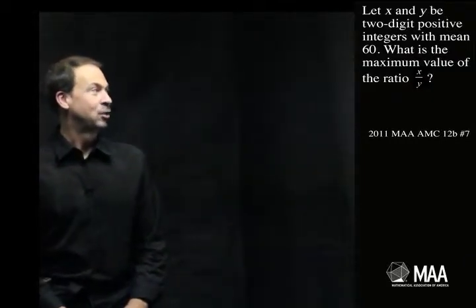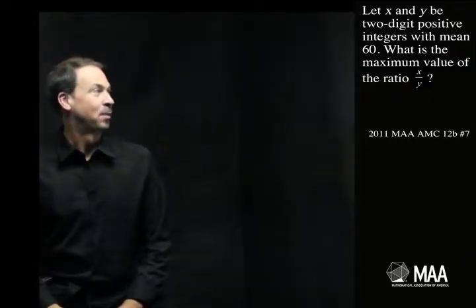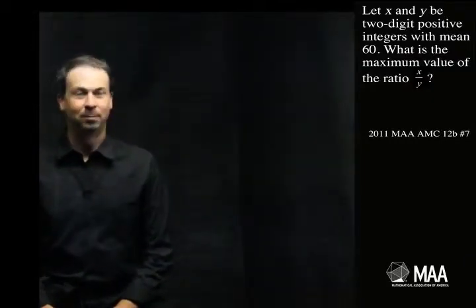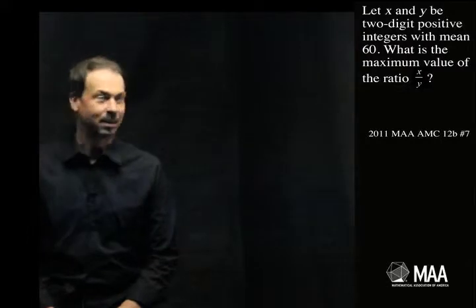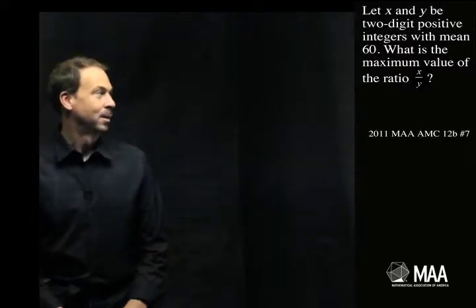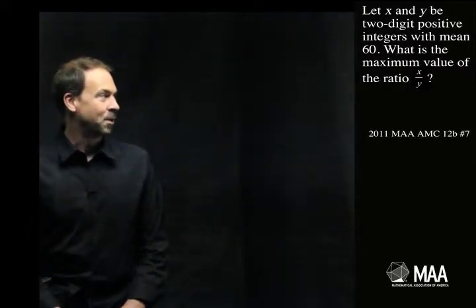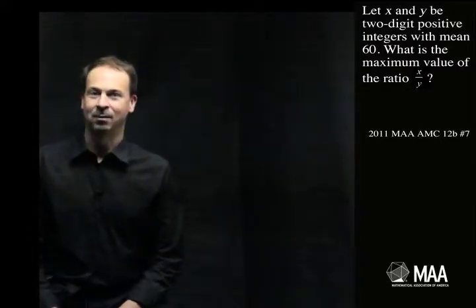Let x and y be two two-digit positive integers with mean 60. What is the maximum value of the ratio x over y?